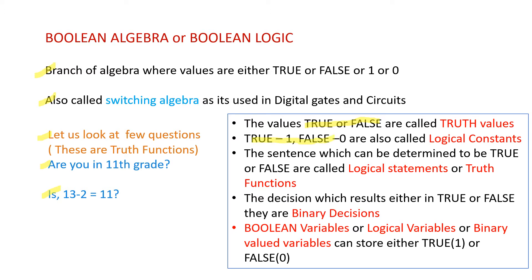A sentence which can be determined to be true or false is called a logical statement or truth function. So 'Are you in 11th grade?' is a logical statement or truth function. A decision which results in either true or false is called a binary decision, because it is either 1 or 0. Just like an algebraic expression has variables, Boolean algebra also has Boolean variables, logical variables, or binary-valued variables, and these variables can store either true or false, or in other words 1 or 0.